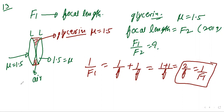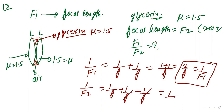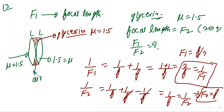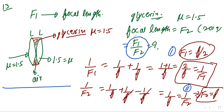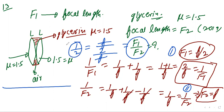When glycerin (refractive index 1.5, same as the lens) is put between the gaps, 1/f2 = 1/f + 1/f − 1/f (the glycerin lens cancels two terms), so 1/f2 = 1/f, giving f2 = f. Now the ratio f1/f2 = (f/2)/f = 1/2.